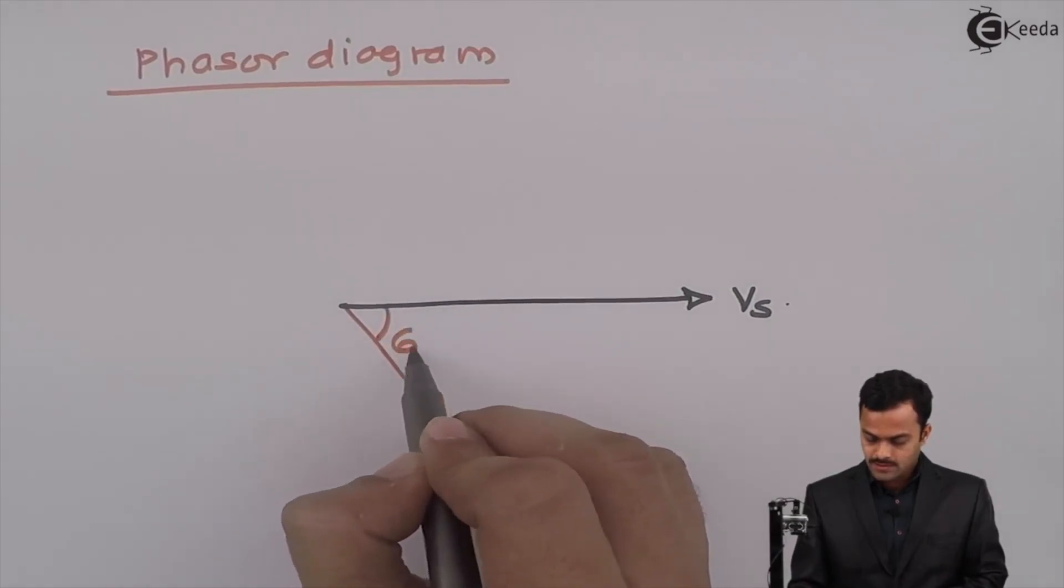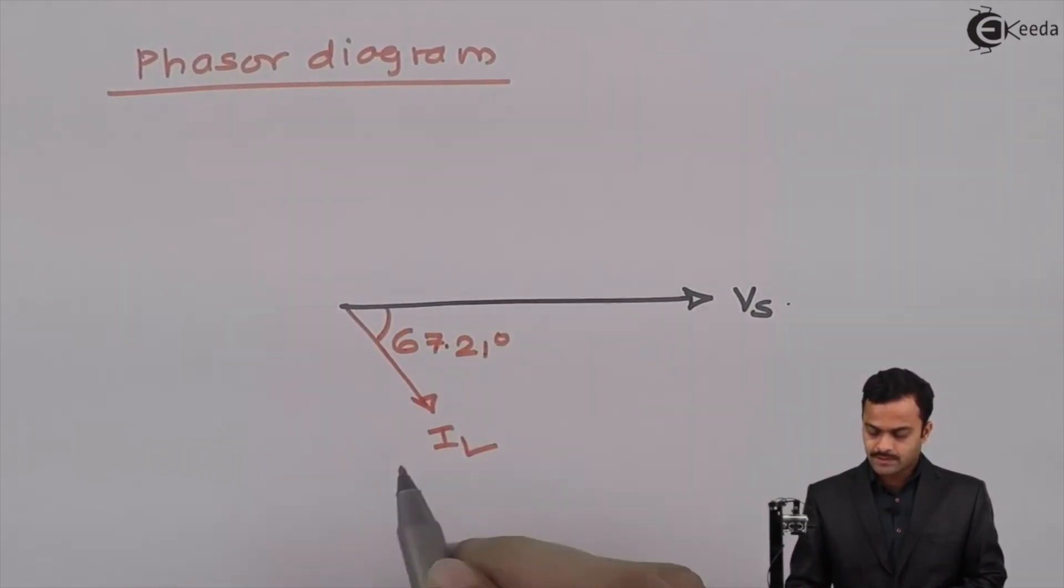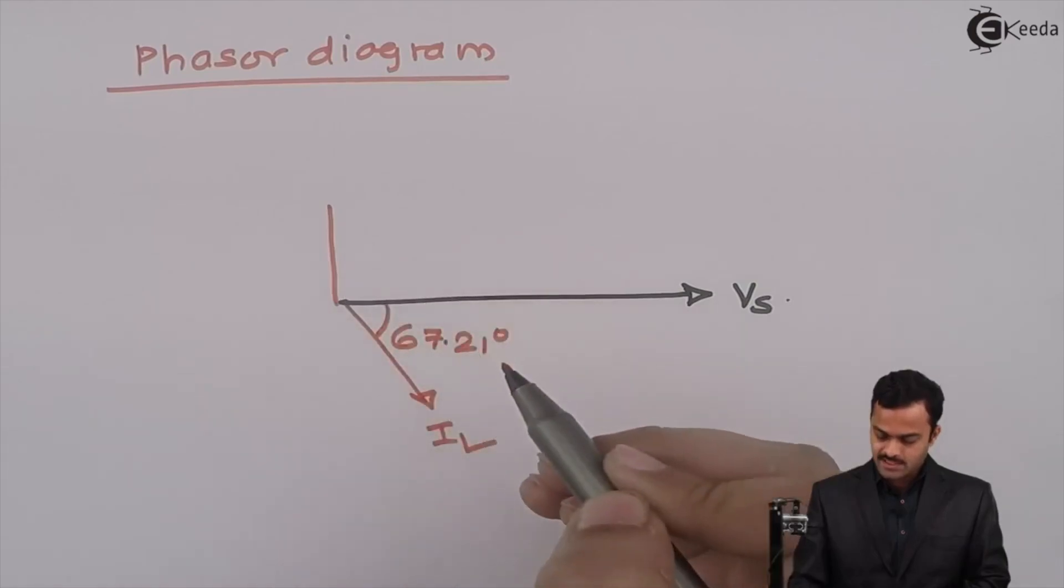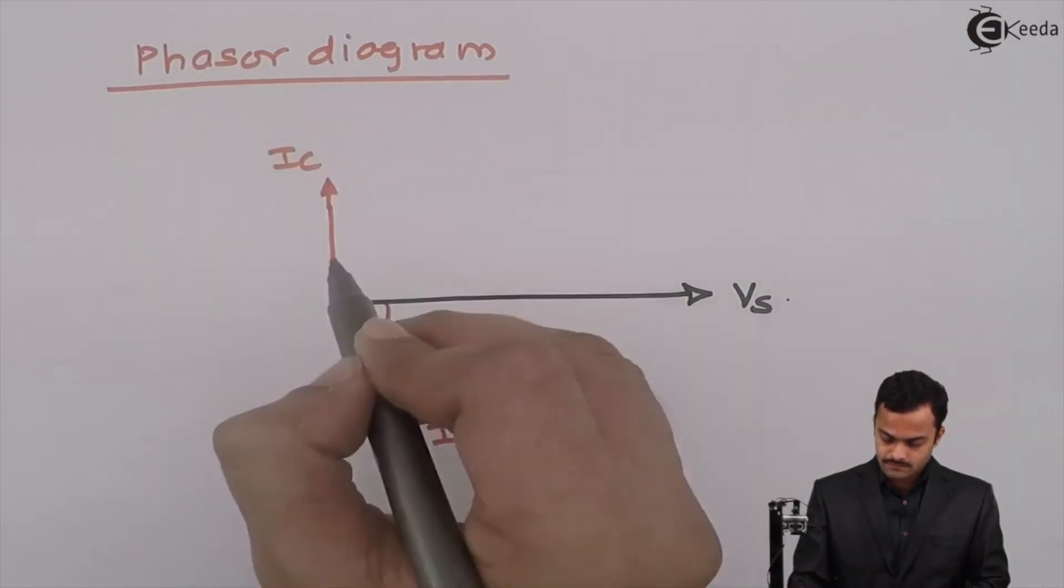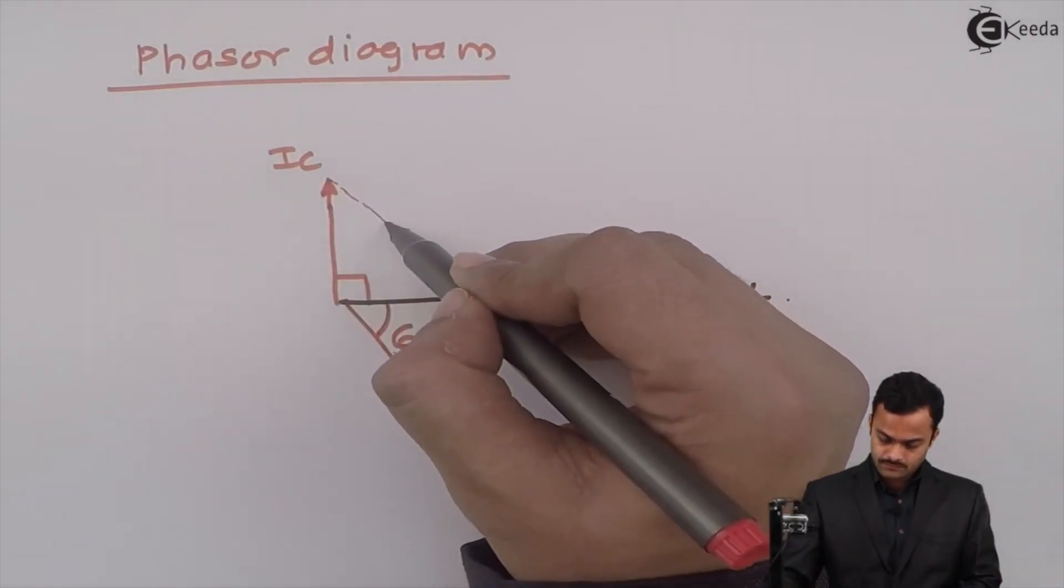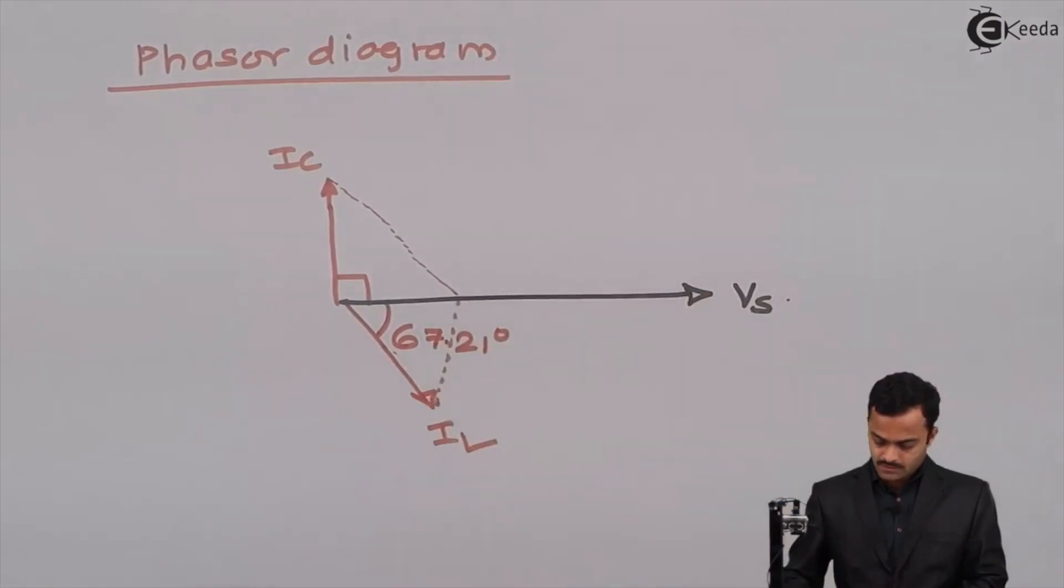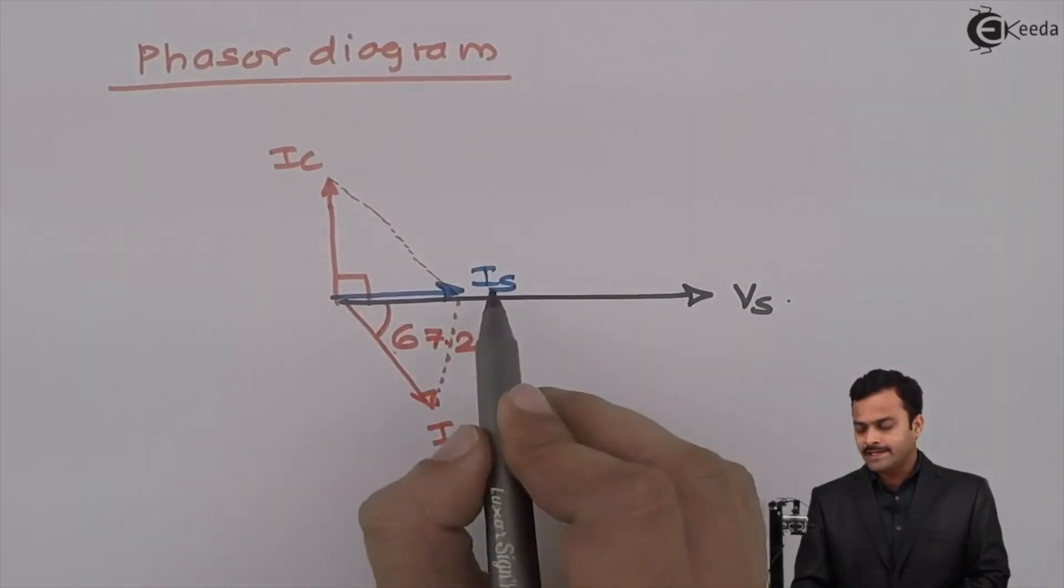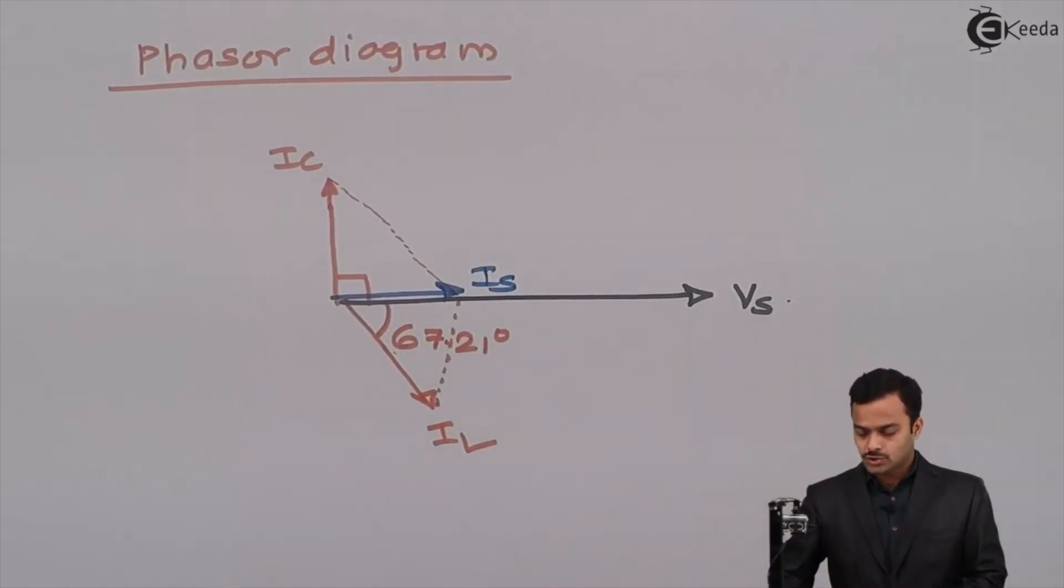Angle will be 67.21 degree and what will be IC? IC is 7.1414 at an angle 90, so it will be like this. It will come in phase with Vs so that resonance occurs. This is a phasor diagram of this problem. Thank you.